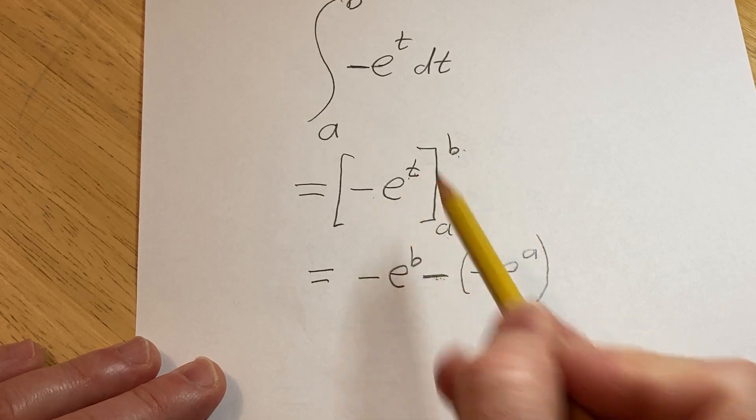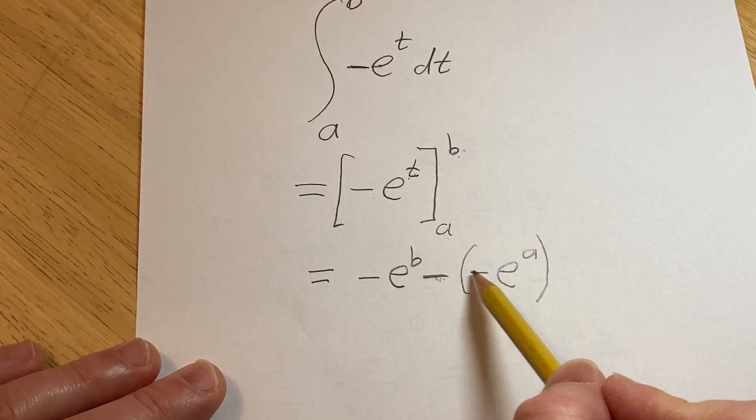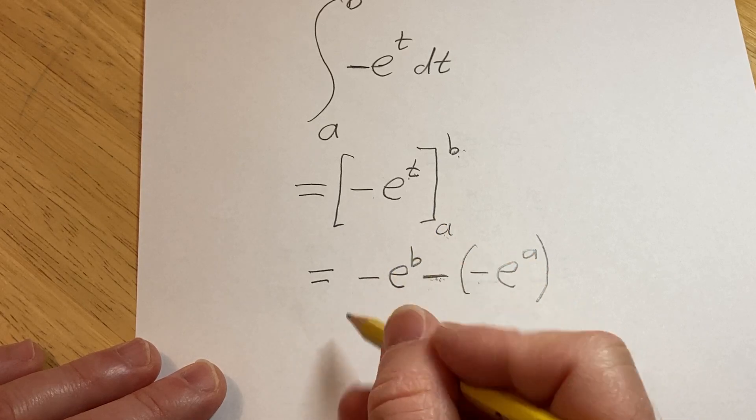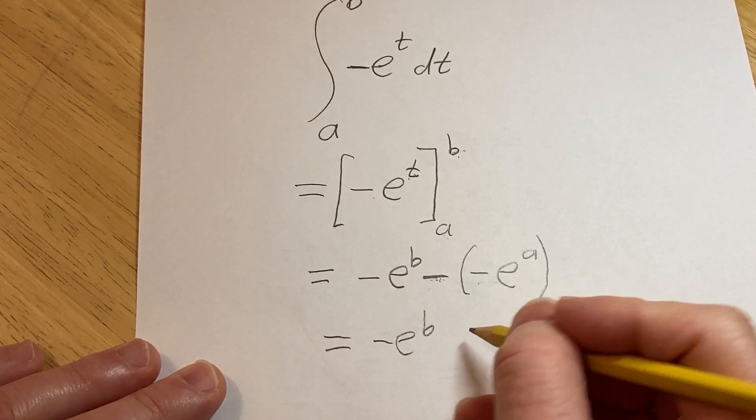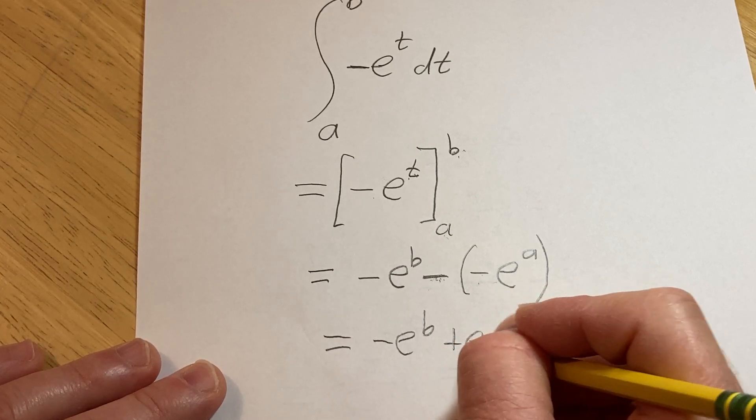So again, you plug in the b, subtract, and then plug in the a. Look at this. Minus and minus is plus. So this is going to be minus e to the b, okay, plus e to the a.